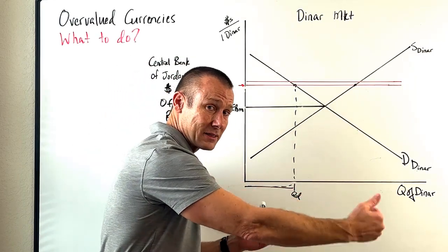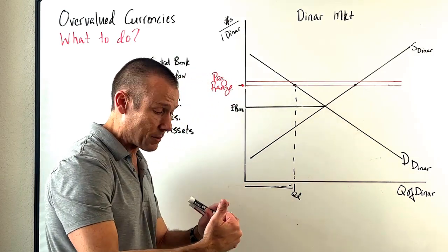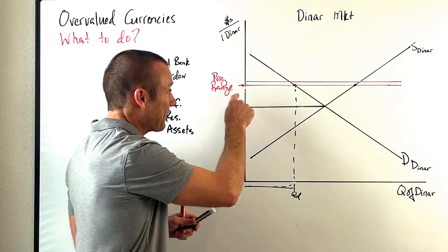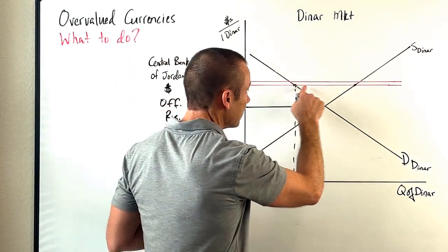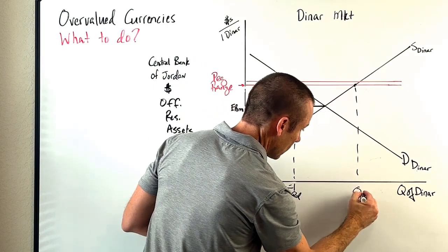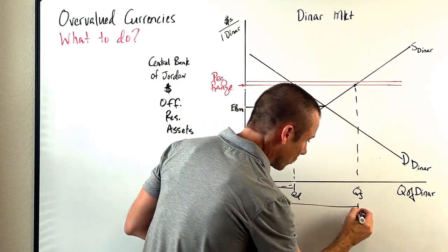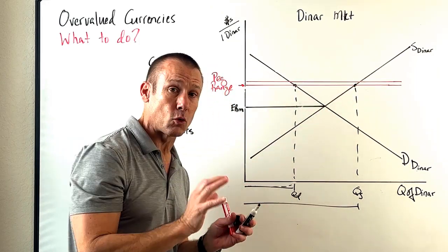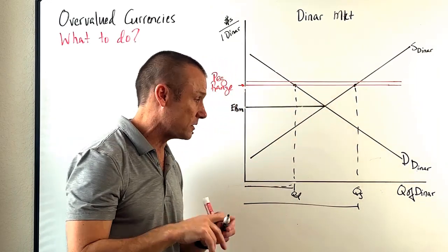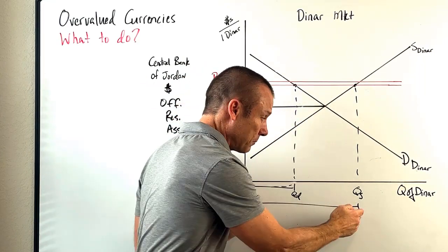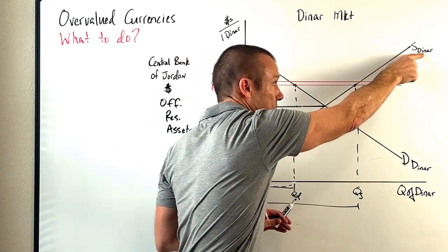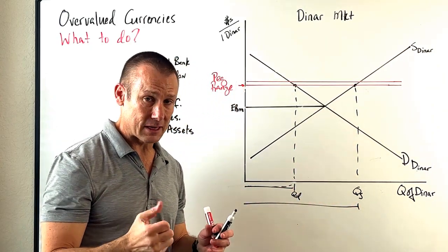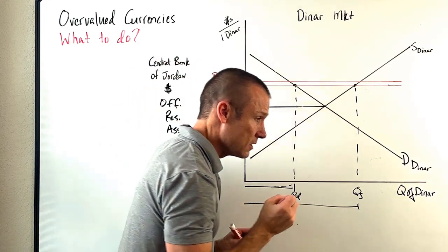But at that peg, this is the quantity supplied — these are people from Jordan who want to go buy imports from abroad, invest abroad. These are people who have the dinar, they're supplying it and want to go out. They represent debit from a balance of payments standpoint.